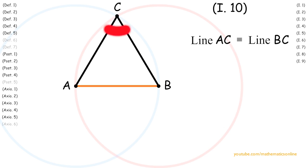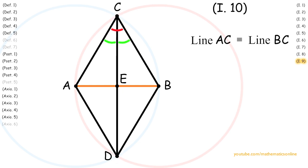Next, with angle ACB, we apply Proposition 9 to bisect it into two congruent angles. Therefore, angle ACE is congruent to angle BCE.